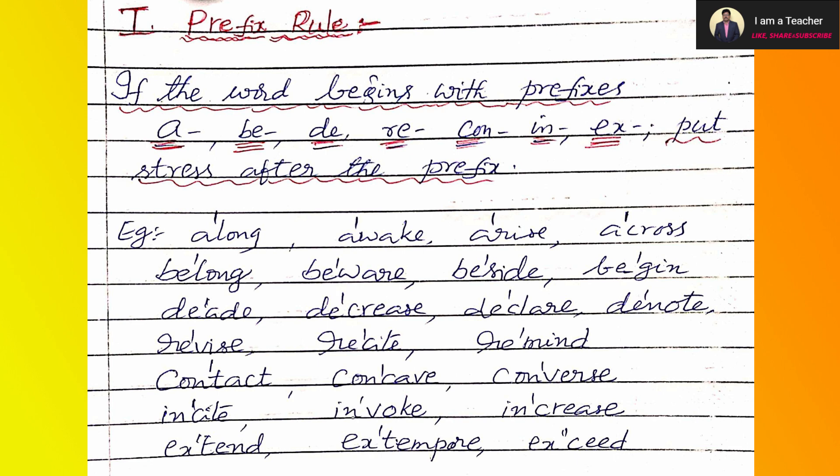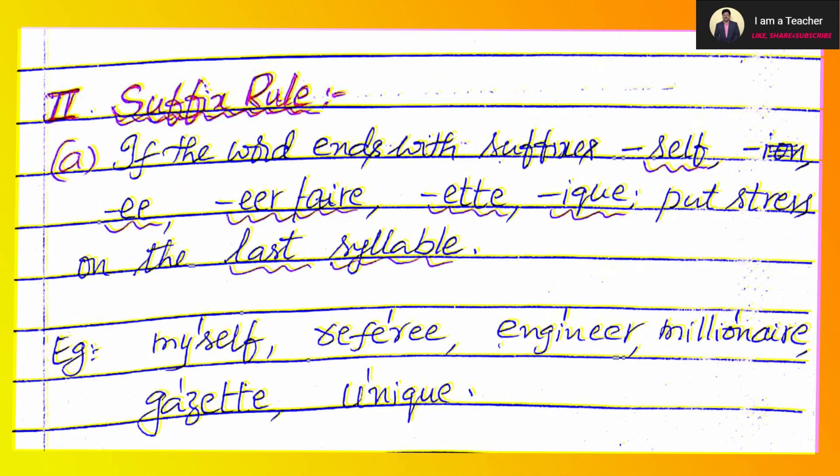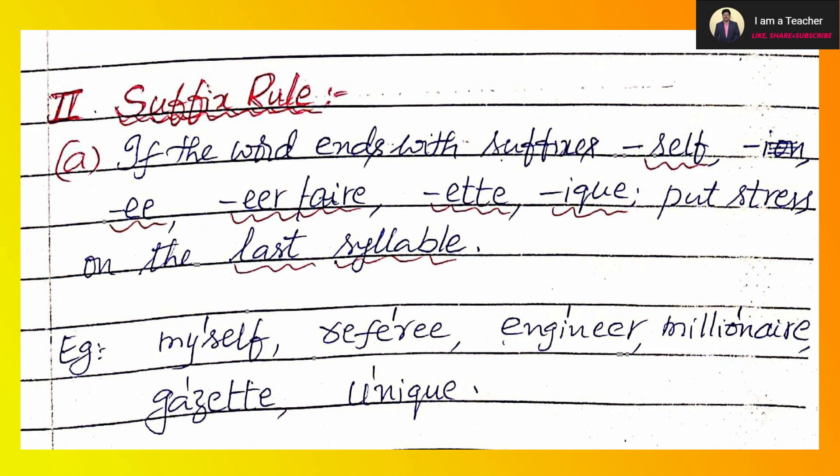Now come to the suffix rule. In suffix, we have three rules. The first one: if the word ends with suffixes — self, ee, ear, at, ik — put stress on the last syllable. Examples: myself, referee, engineer, millionaire, gazette, unique.